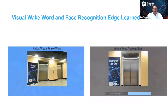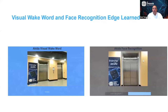What we've done here is we have Akita running in two different environments. We have what's called visual wake on one side, in the blue screen, and that will show you that it recognizes a person that enters the room. Then you have face recognition on the other side, where we'll show you who that person is.